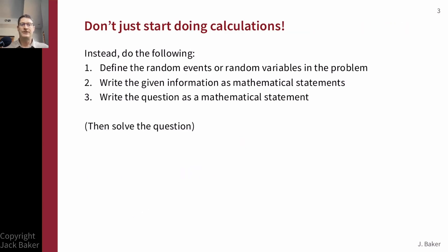Here's what I'd suggest. When you see one of these word problems, first, think about what are the random events and random variables in this problem — what is it that I'm actually trying to quantify? Second, if you're given percents and probabilities in the problem statement, try to turn those into mathematical statements. Third, see if you can write down the question as a mathematical statement using probability terms. Once you've written down what you know and the question mathematically, you can go about solving it. Getting yourself organized first means you're not thinking about solution strategies at the same time as organizing information.